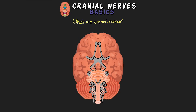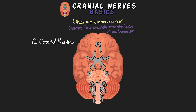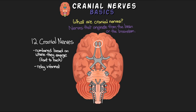Cranial nerves are nerves that originate directly from either the brain or the brain stem. There are actually 12 different cranial nerves, and each one is paired and present on both sides of the body. We use Roman numerals to number them based on where they emerge from the brain and brain stem, viewed front to back. To view these cranial nerves we look at the inferior surface of the brain, and essentially what these cranial nerves do is relay information to and from various parts of the body, primarily the head and neck.